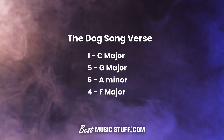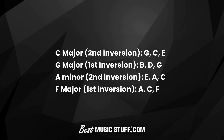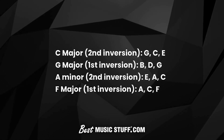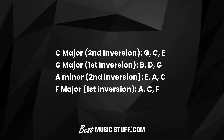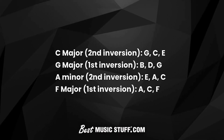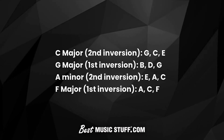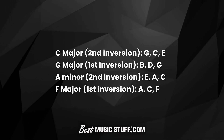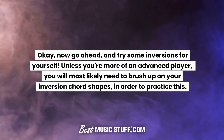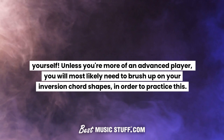Here are three examples of how you can incorporate chord inversions into a chorus, based on the verse of the dog song: C major, G major, A minor, and F major. We will introduce new inversions for all four chords. For example: C major second inversion — G, C, and E. G major first inversion — B, D, and G. A minor second inversion — E, A, and C. F major first inversion — A, C, and F. Now go ahead and try some inversions for yourself. Unless you're more of an advanced player, you will most likely need to brush up on your inversion chord shapes in order to practice this.